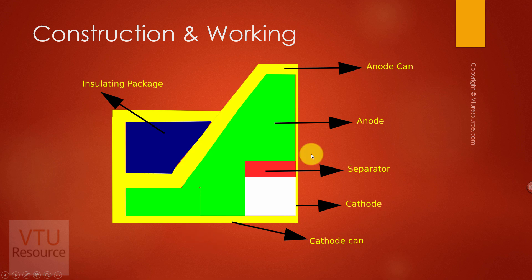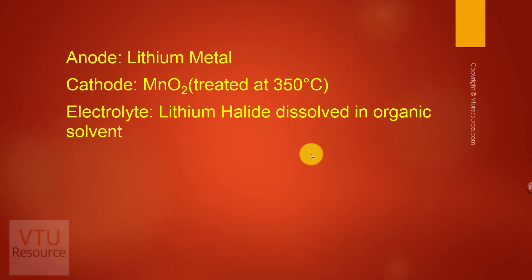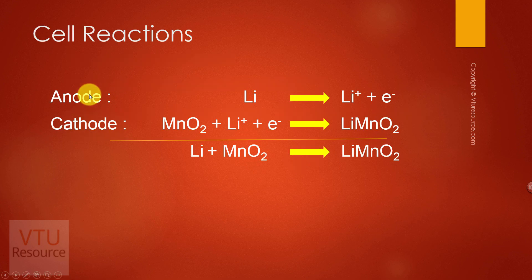The reactions that occur in lithium manganese oxide battery are as follows. At the anode, metal lithium undergoes oxidation to give lithium ion and an electron.